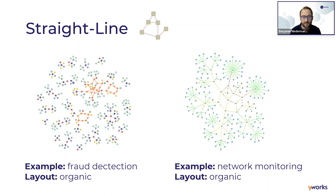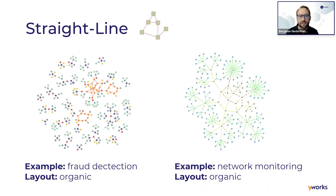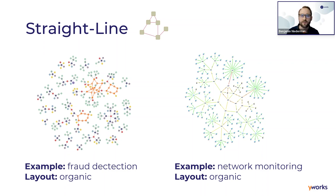Social networks are also typically layouted using the organic layout, and this is not by accident but by purpose. If you want to use straight-line segments, it pays off to use the organic layout because its main assumption is that nodes can be moved freely. The layout algorithm uses this to place nodes so edges do not cross each other where possible, reducing crossings, edge length, and overlaps with nodes.